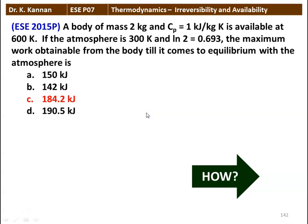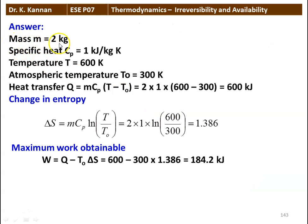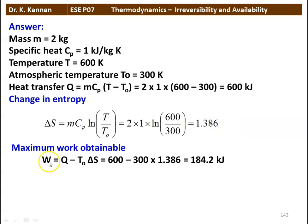Here is the solution. Mass equals 2 kilogram, specific heat CP equals 1 kilojoule per kilogram Kelvin, T equals 600 Kelvin, atmospheric temperature T0 equals 300 Kelvin. Heat transfer Q equals MCP times (T minus T0): 2 times 1 times (600 minus 300) equals 600 kilojoules. Change in entropy delta S equals MCP times ln(T/T0): 2 times 1 times ln(600/300) equals 1.386. Maximum work W equals Q minus T0 times delta S: 600 minus 300 times 1.386 equals 184.2 kilojoules.